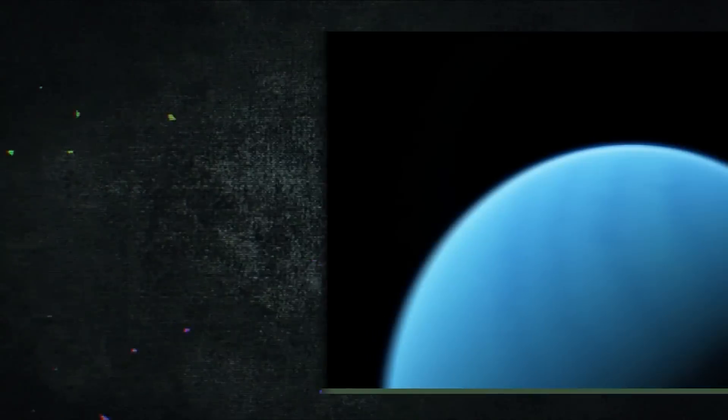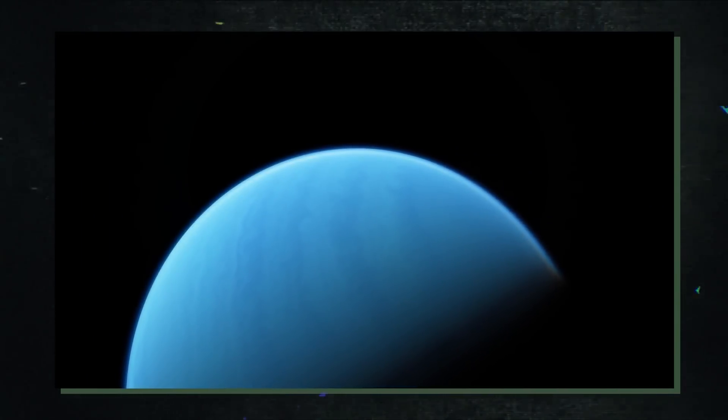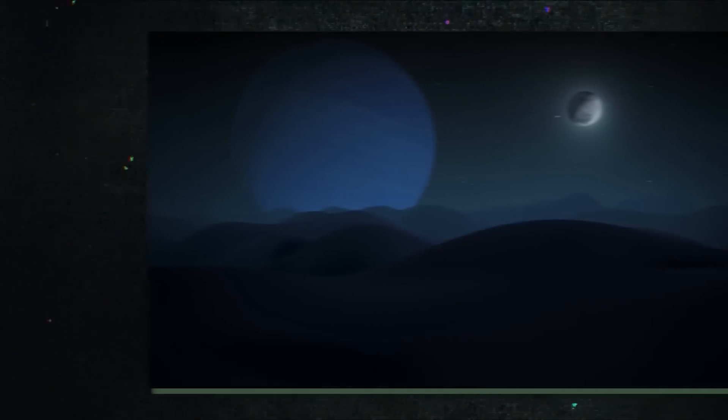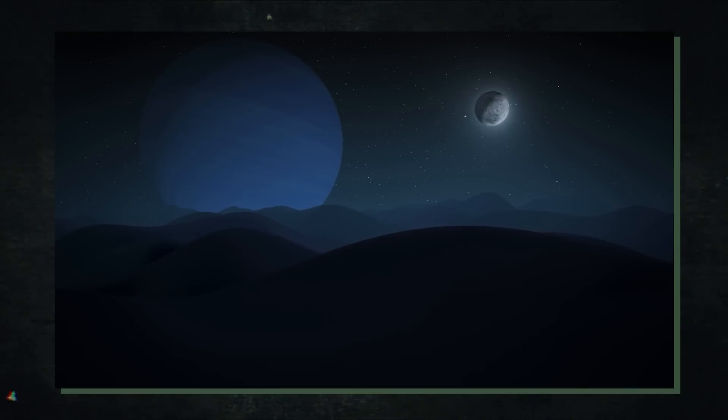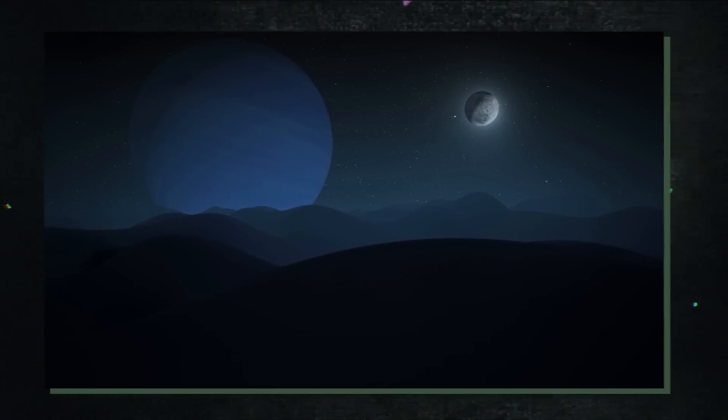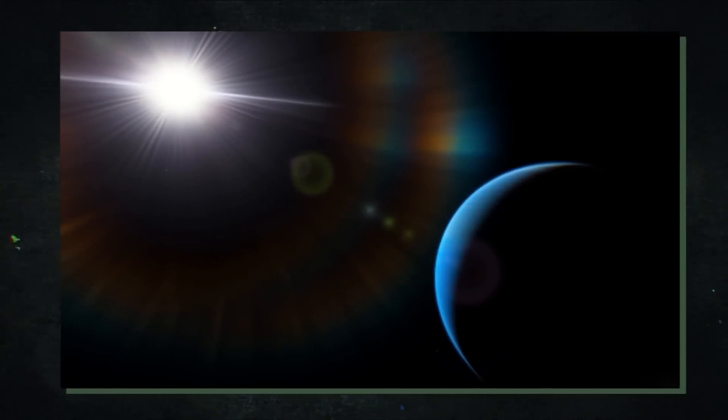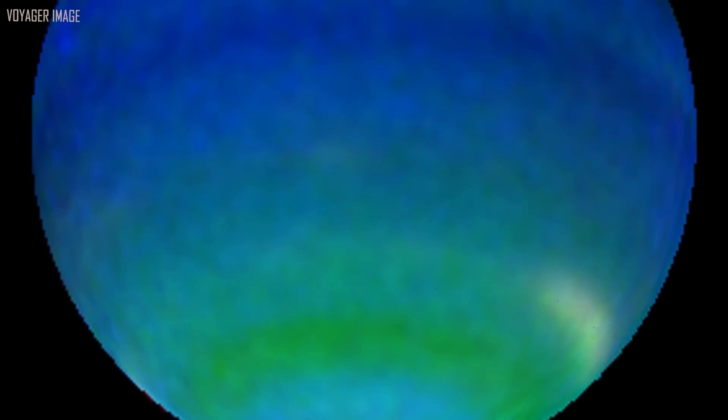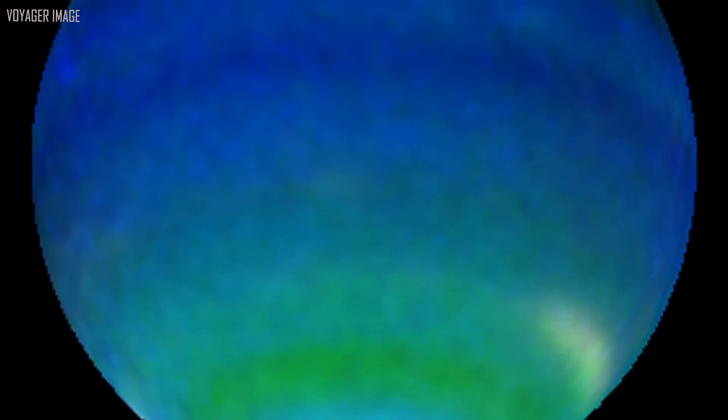Before it was ever discovered, Neptune's existence was anticipated. The nearby planet Uranus seemed to have an odd orbit, which astronomers discovered. It appeared as though another planet was pulling Uranus. Mathematical calculations by scientists led to the planet's discovery in 1846. Since its discovery, it has only made one full orbit, which takes 165 years to complete because it is so far from the Sun.